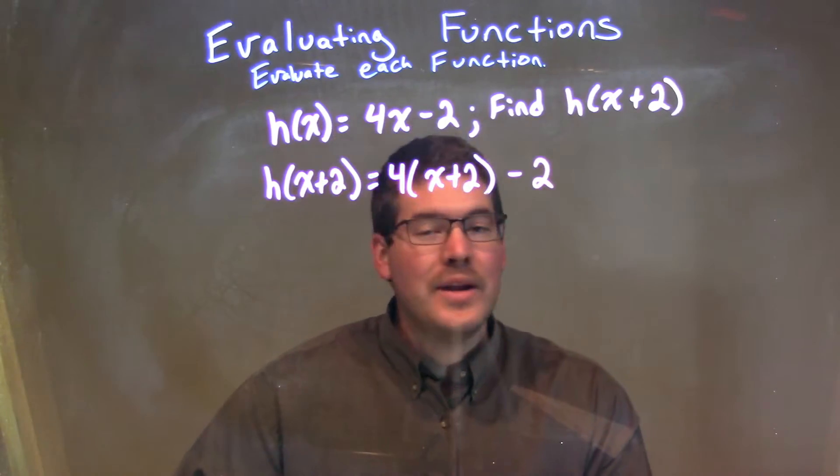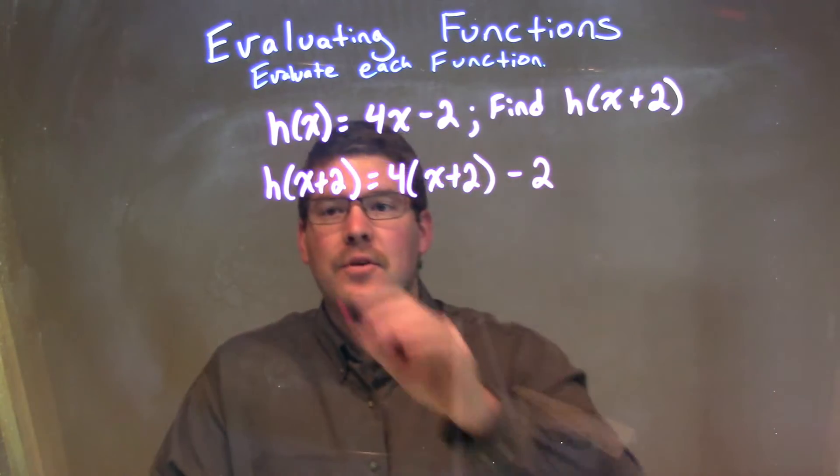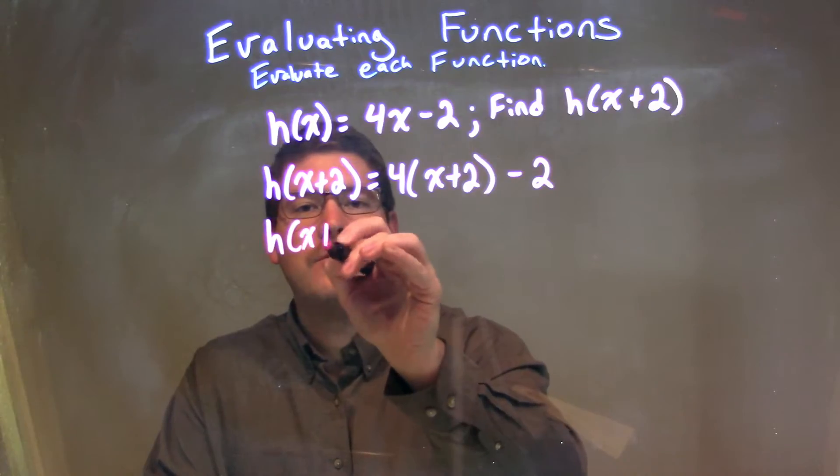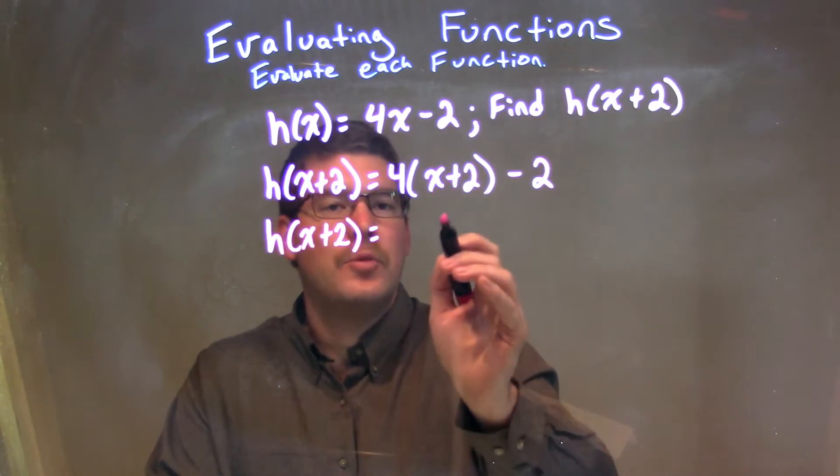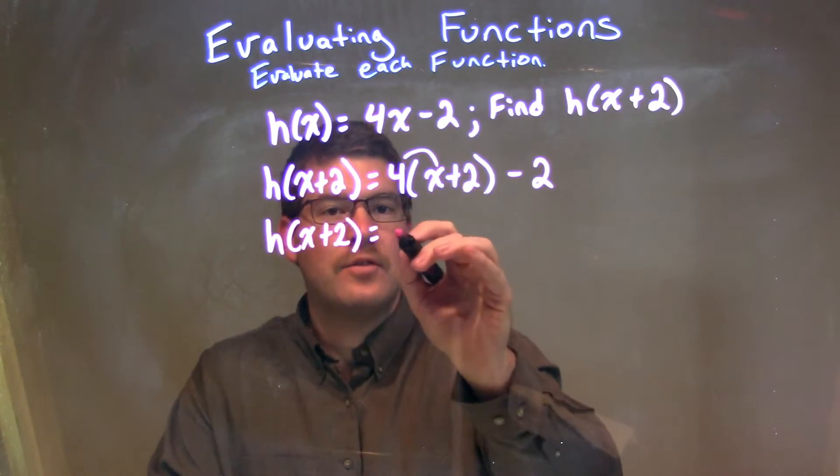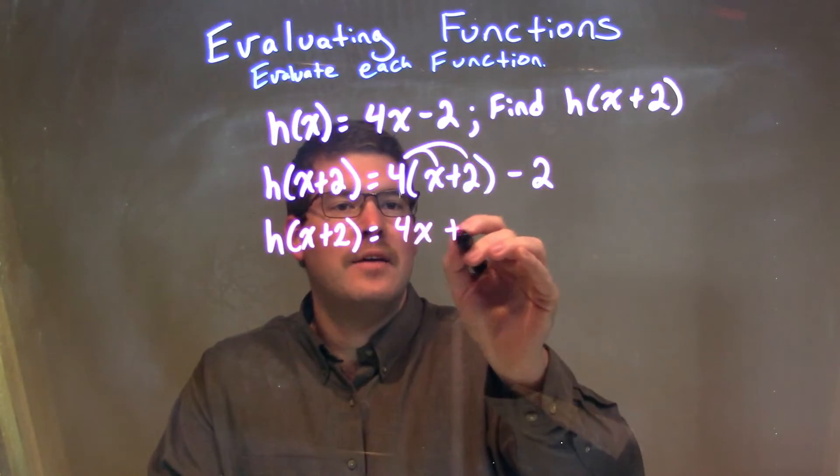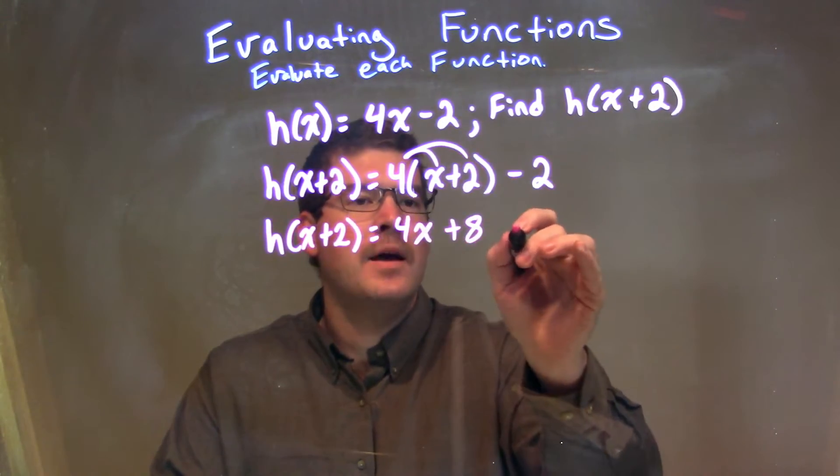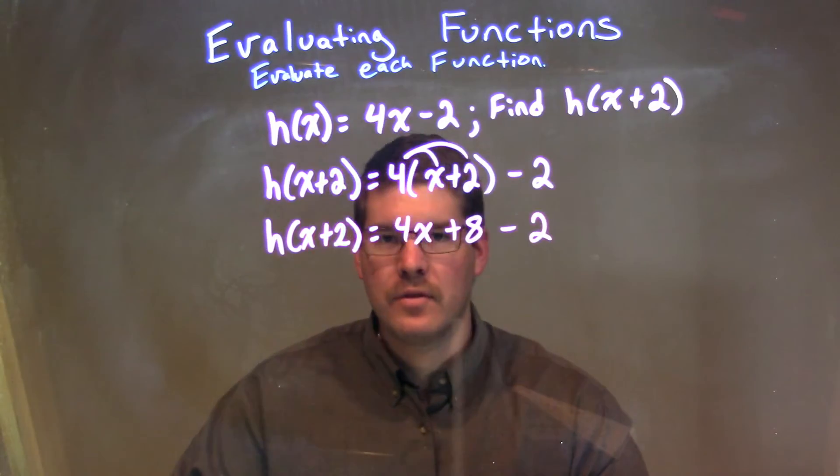Well, what we need to do now is just simplify. So, h of x plus 2 just comes down. We distribute the 4. 4 times x is 4x, and 4 times 2 is 8. So, we have 4x plus 8 here, and then we have a minus 2 on the outside.